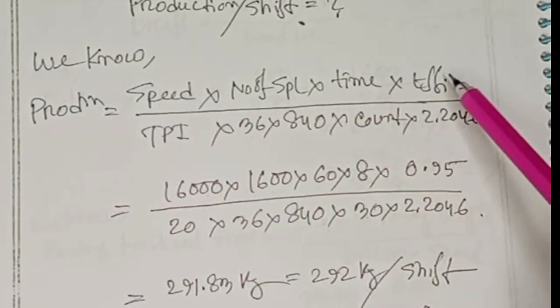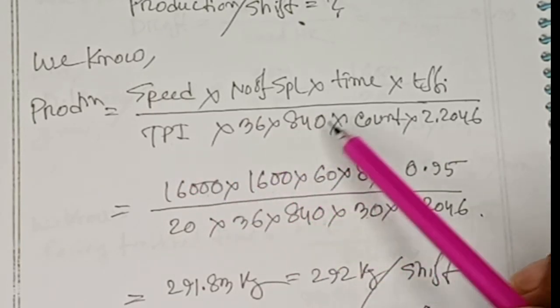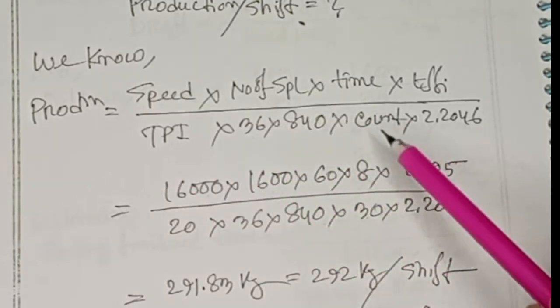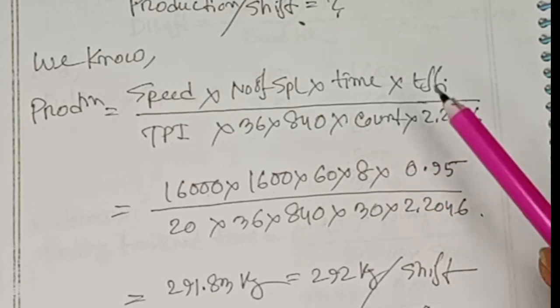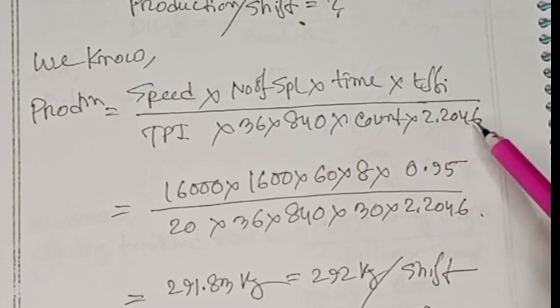divided by TPI times 36,840 times number of count times 2.2046.